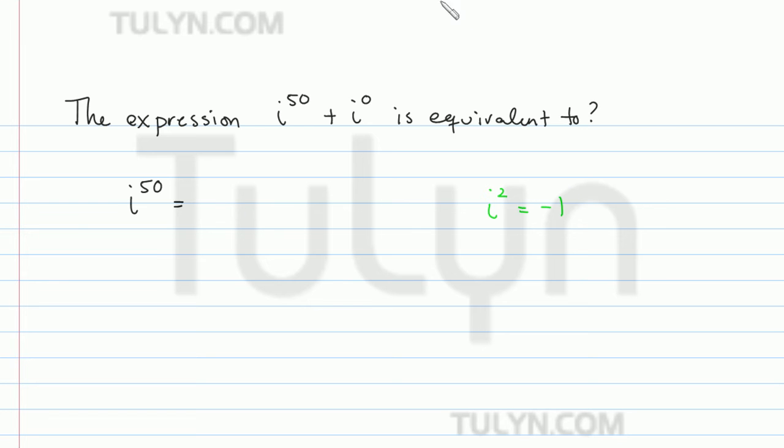Remember that when you have a power taken to another power, you multiply the exponents together. So we can actually rewrite this as i squared to the 25th, because then when we distribute this 25 back in, the 25 times 2 is going to give us 50. So it's an equivalent expression.